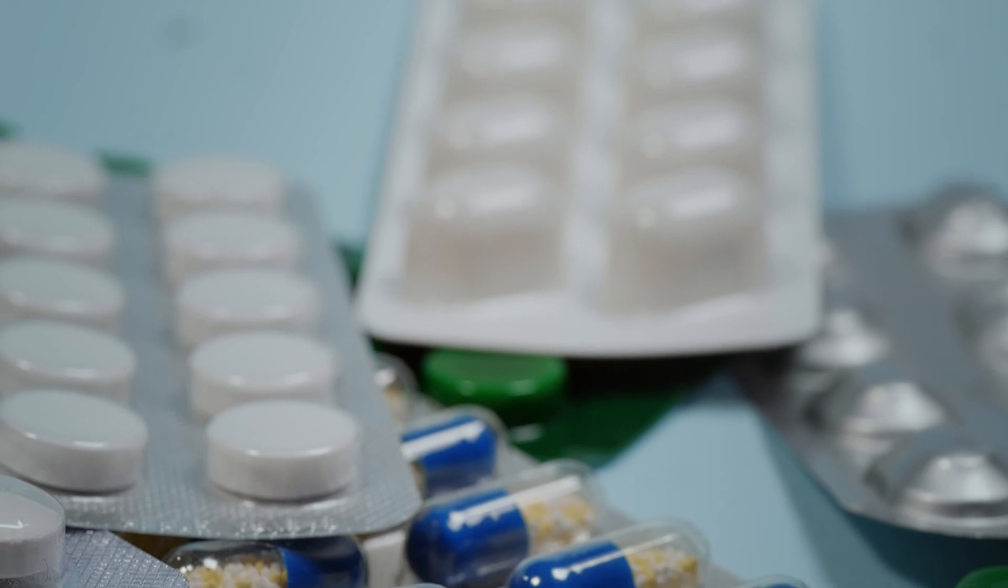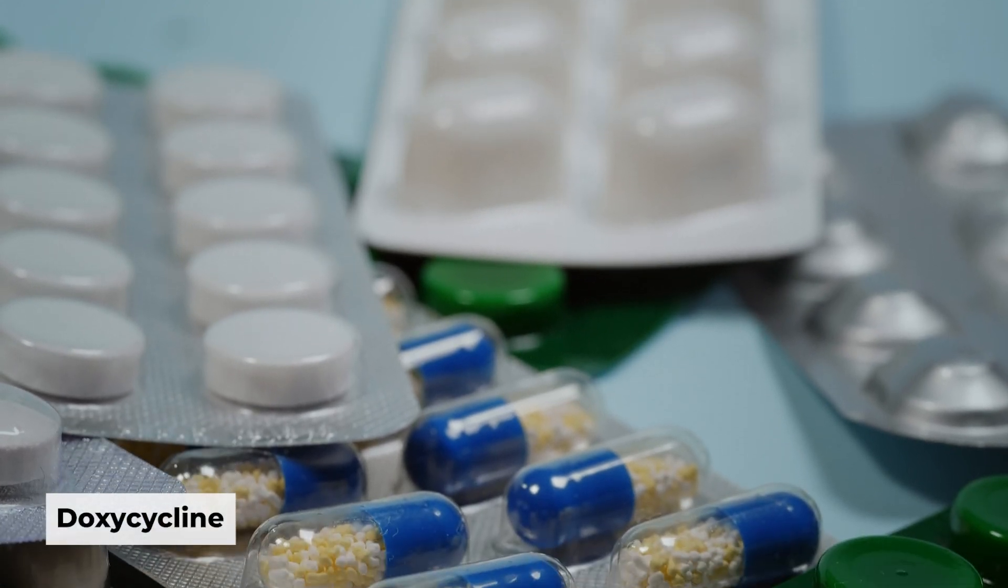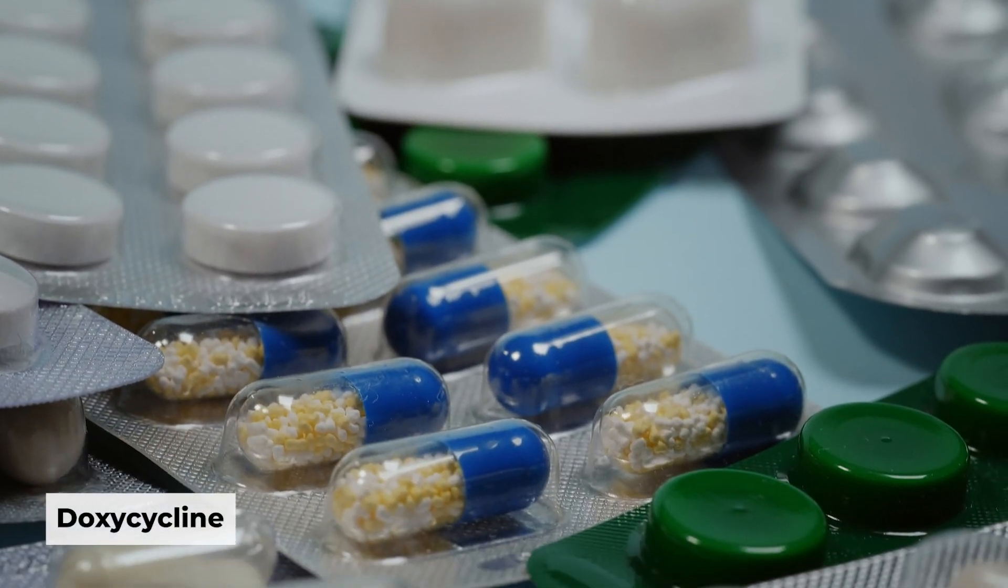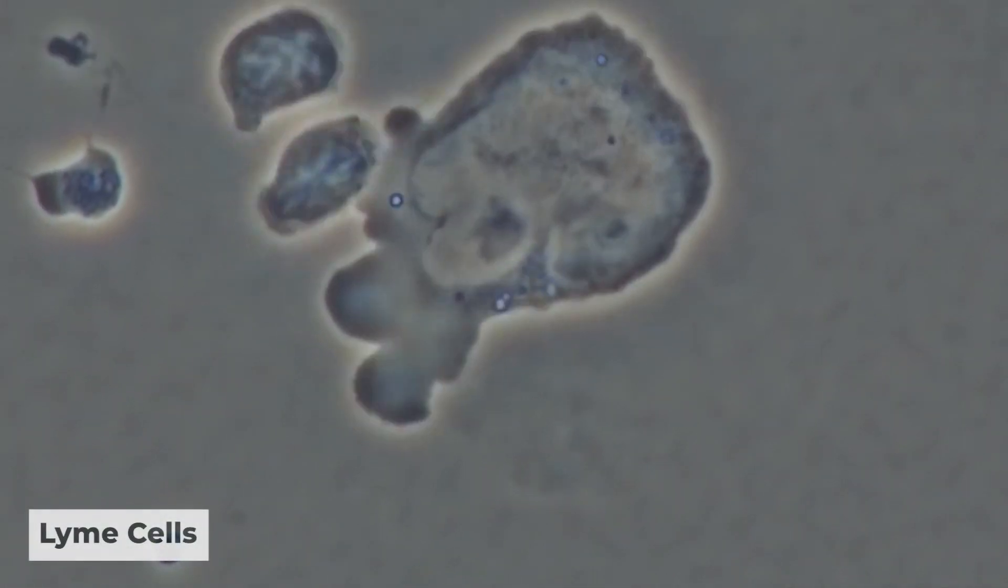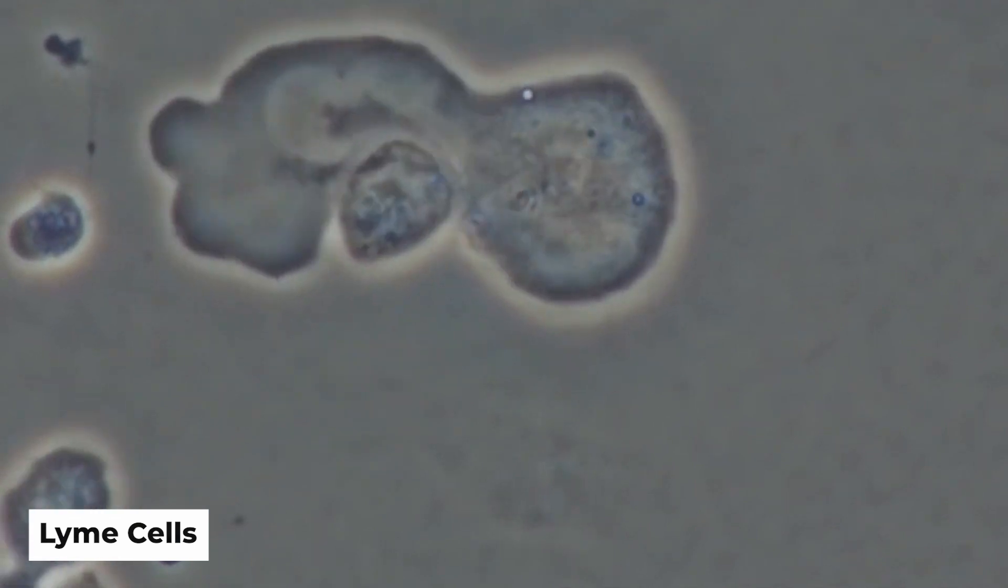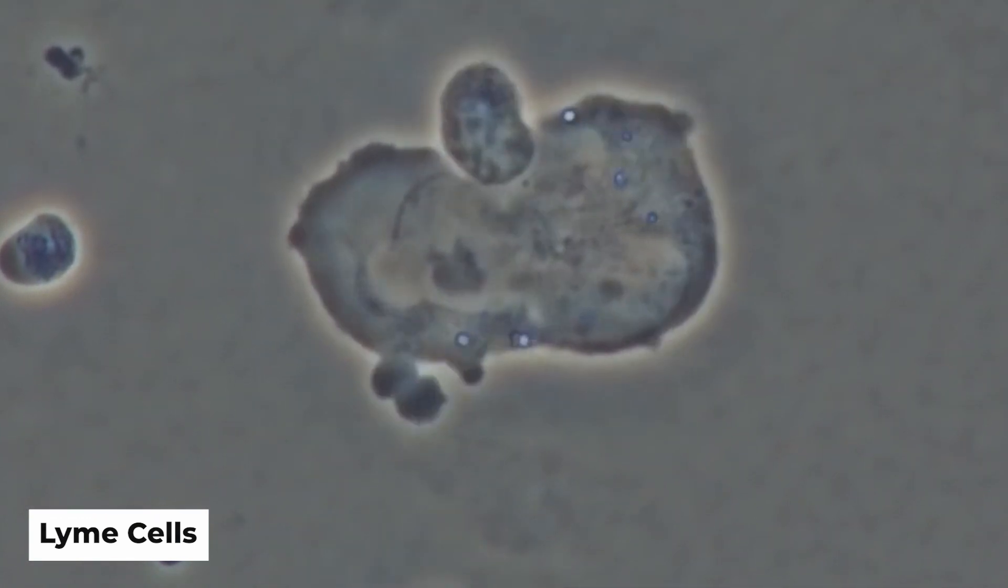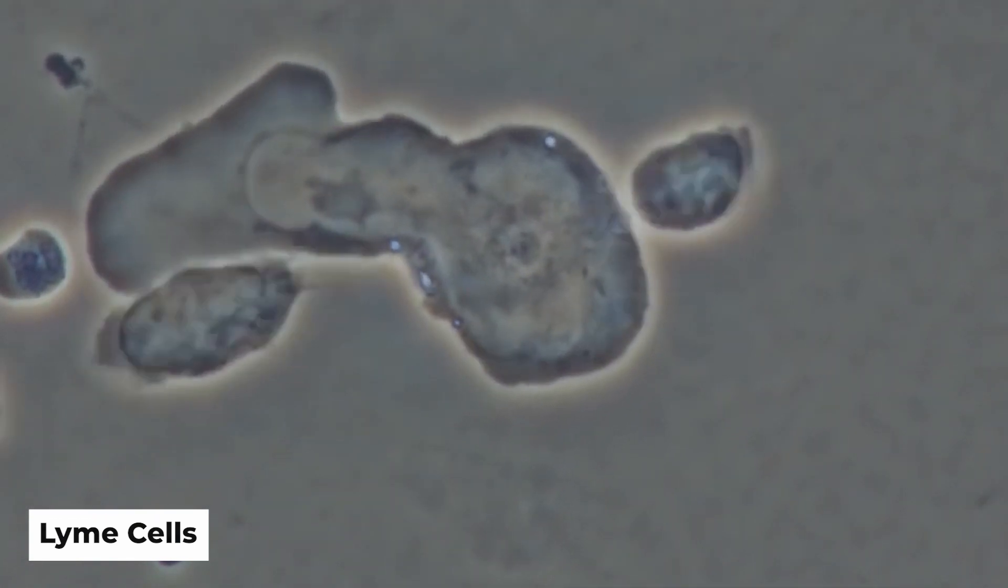Some antibiotics, such as doxycycline, are only effective when the bacteria are spirals and won't work on a colony. For example, when Lyme cells colonize, they cover themselves in protective biofilms, making it hard for antibiotics and the immune system to reach them.